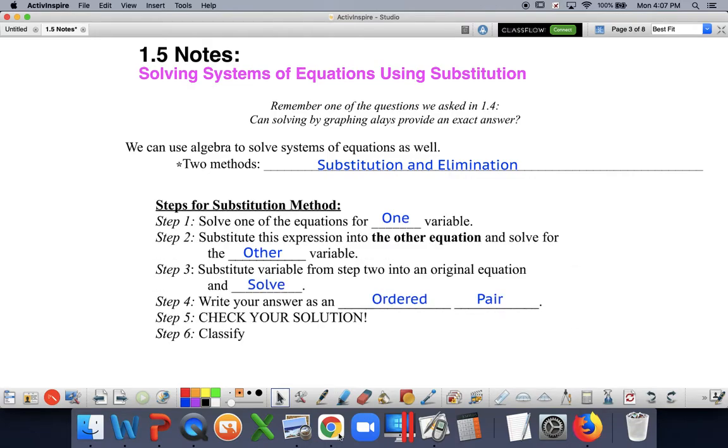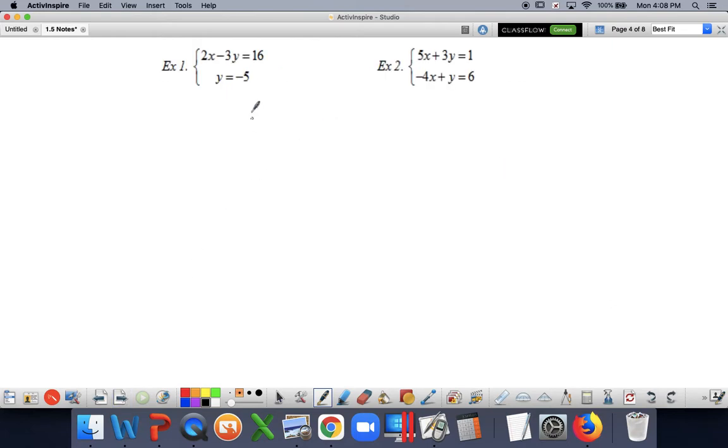Here are the steps for solving, because I know sometimes students like to have a list of a procedure that they do when solving. The first thing you do is solve one of the equations for one variable. So you're either going to solve for x equals or y equals. It doesn't matter which one. Substitute this expression into the other equation. Make sure you're not going in circles. You've got to use the other equation. Substitute the variable from step two into an original equation and solve. Write your answer as an ordered pair. It should look something like this. Check your solution and then last but not least, we're still going to continue to classify.